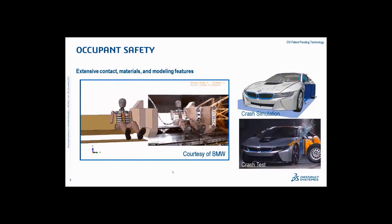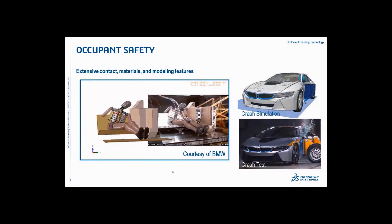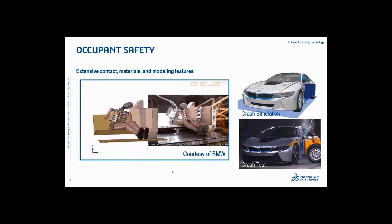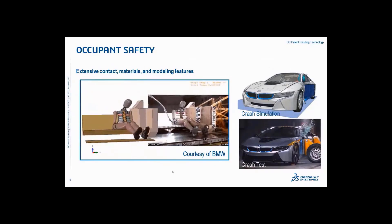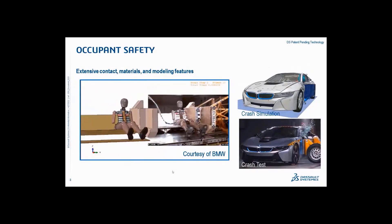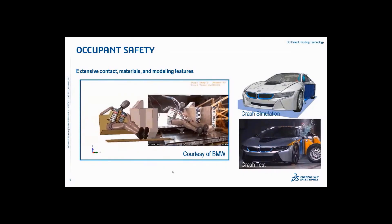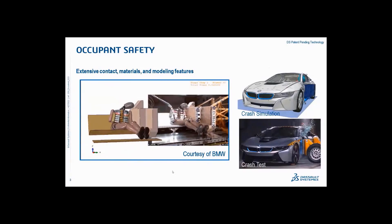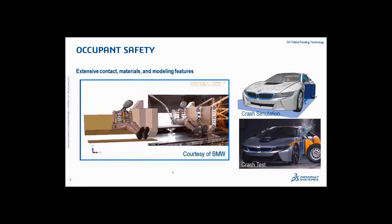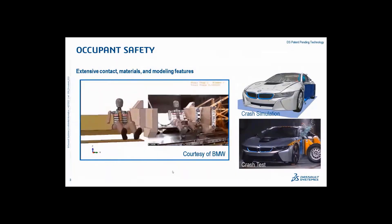Shown on the screen are comparisons of simulation results against real-world testing. Not only is there no visible difference between simulation and test, but the physical quantities and histories are matching really well with experiments. On the left is a dummy impact sled test scenario to evaluate the accelerations and injuries experienced by humans during a side impact. On the right is a side impact of the BMW vehicle to evaluate how the design of the B-pillar and surrounding body-in-white prevents the driver compartment from being intruded.